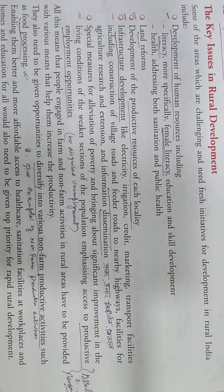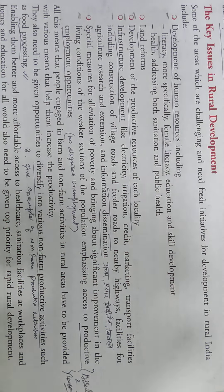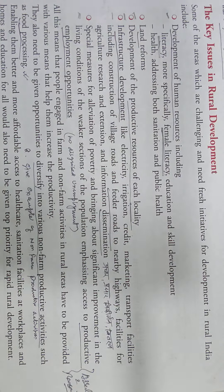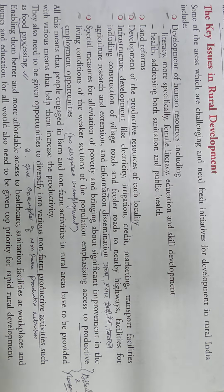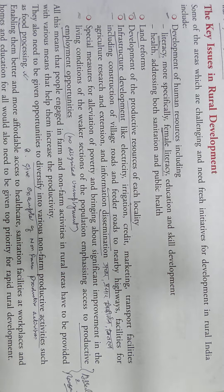Welcome once again to this second video on rural development. In the intro part of the previous session, we talked about the major sources of livelihood in India and rural areas, and found that agriculture is the main source. We came to know that more than two-thirds of India's population depends on agriculture, and that one-third of rural India still lives in poverty.